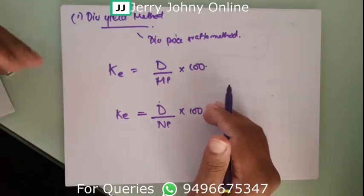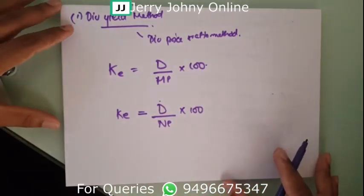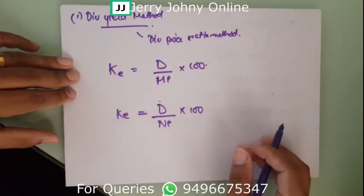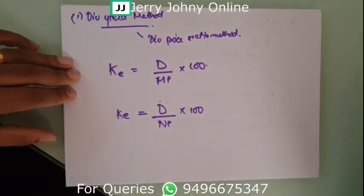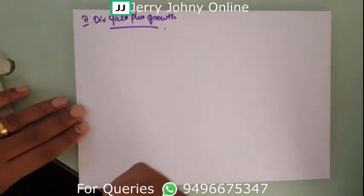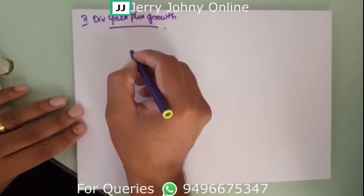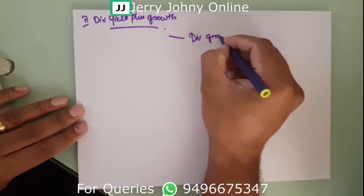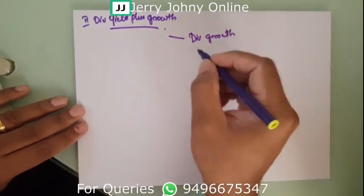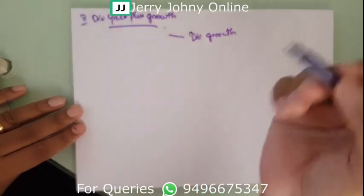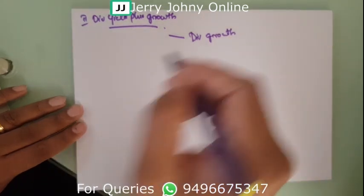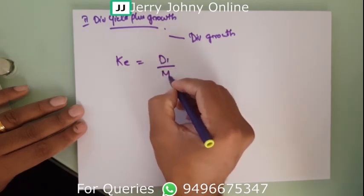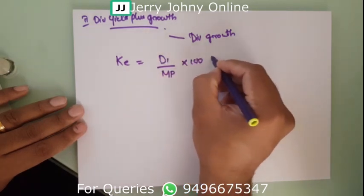We don't have practice problems for this particular method — it is more or less theoretical. Now let's look at the dividend yield plus growth method. In this method, we assume there is a growth element to the dividend — the dividend grows over time and does not stay stagnant. The formula is: KE equals D1 divided by MP into 100, plus G, where G stands for the growth rate of the dividend.